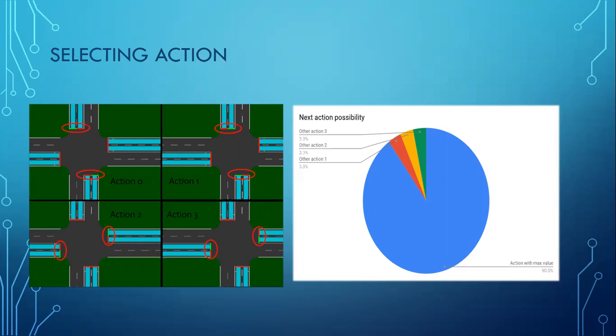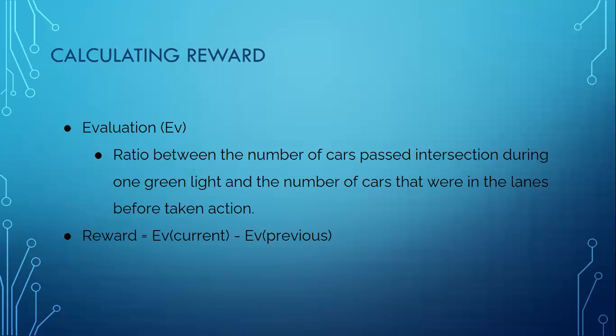Calculating the reward was one of the most important parts of our project for implementing Q-learning. In order to do that, we used a ratio between number of cars past intersection during one green light and the number of cars that were in the lanes before taking action. Finally, the reward is calculated as subtraction between evaluation of current step and evaluation of previous step.